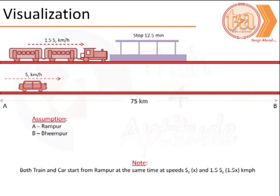From the visualization, we assume that the speed of the car is SC or X km per hour. A is renamed for Rampur, B is renamed for Bhimpur.